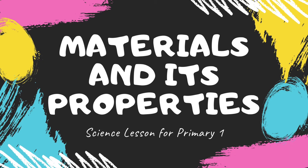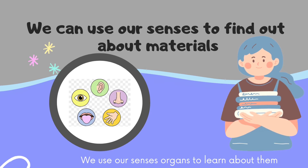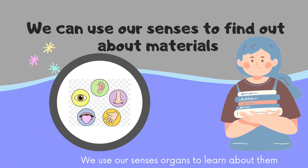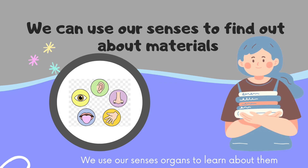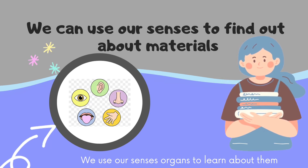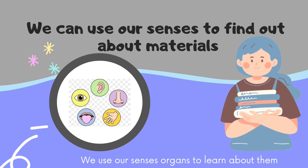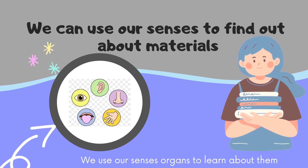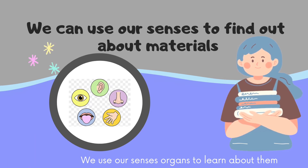Hi Primary One, how are you today? I hope all of you are fine. Today in science lesson we are going to learn about materials and its properties. Let's learn together. We can use our senses to find out about materials. Do you still remember our five senses? Very good. We use our sense organs to learn about them. For example, we use our eyes to see objects or things around us.